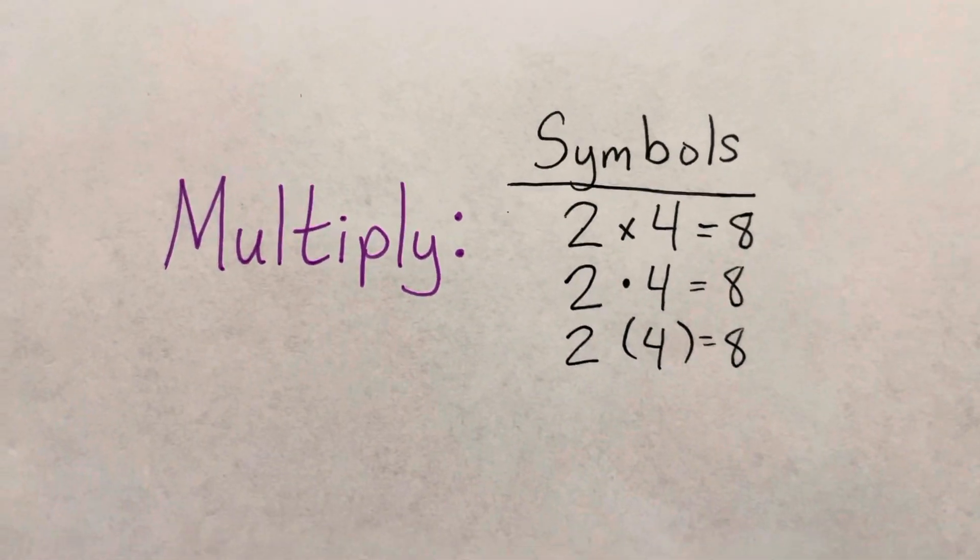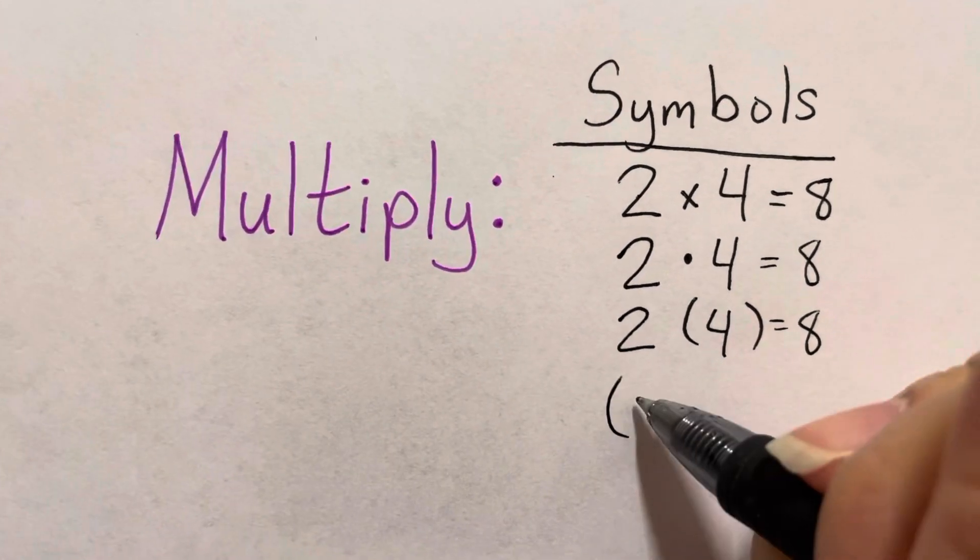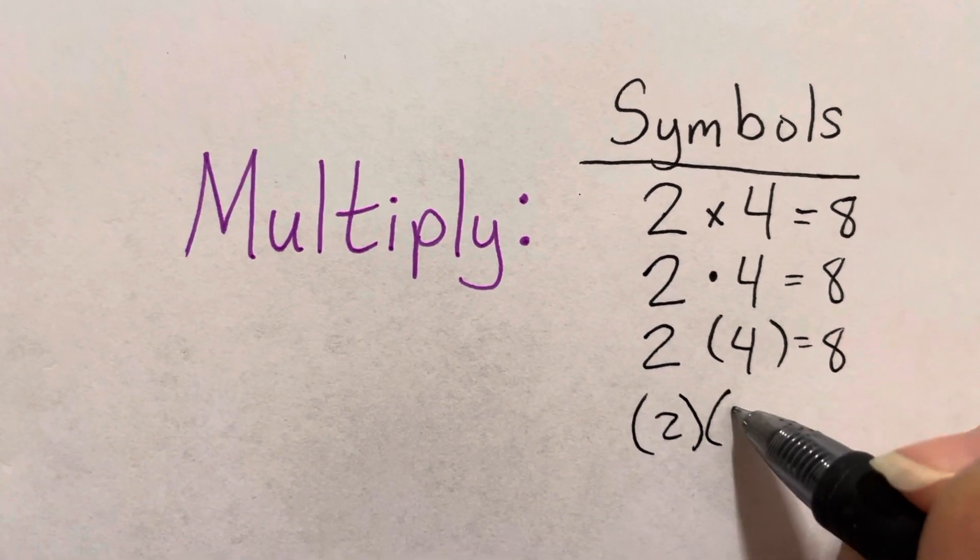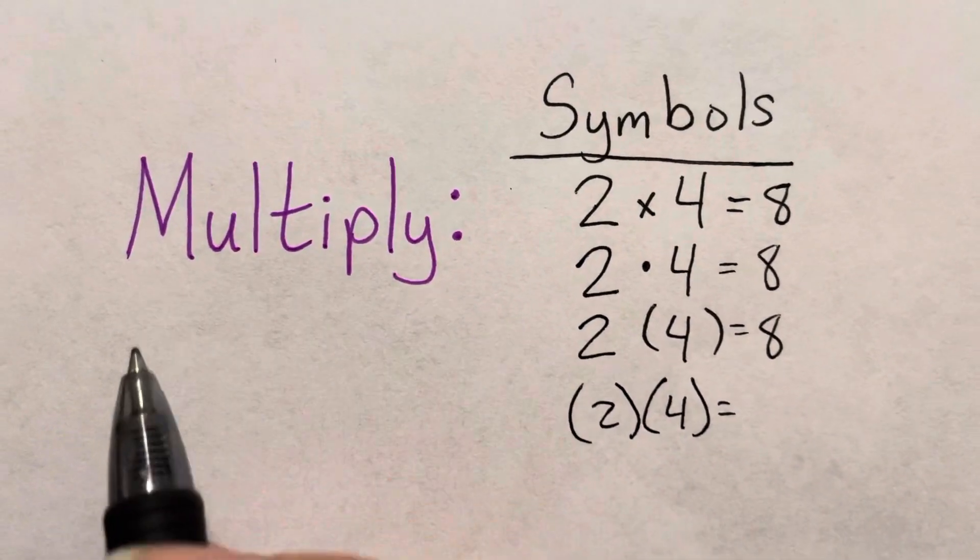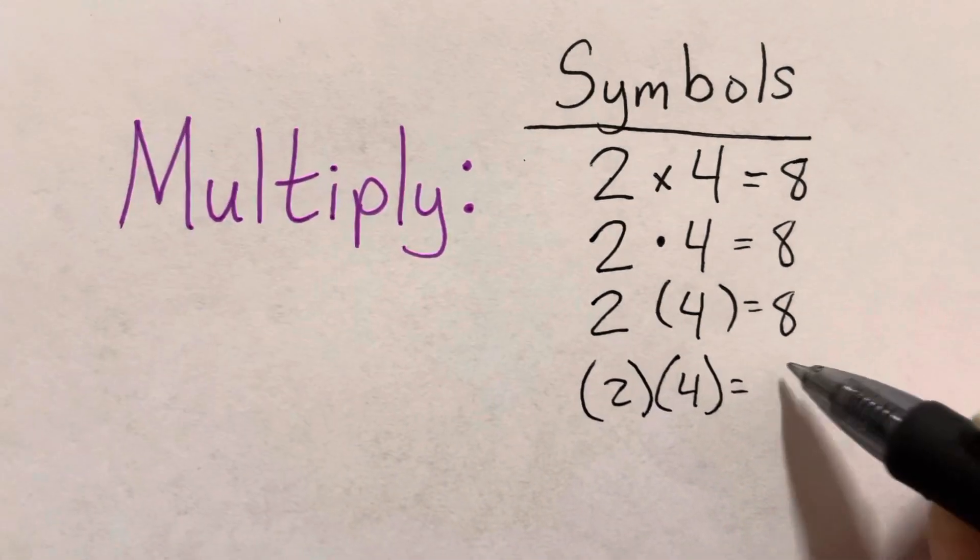Alright? Sometimes you might even see double parentheses. But that still means you multiply. Okay? So, 2 times 4 equals 8.